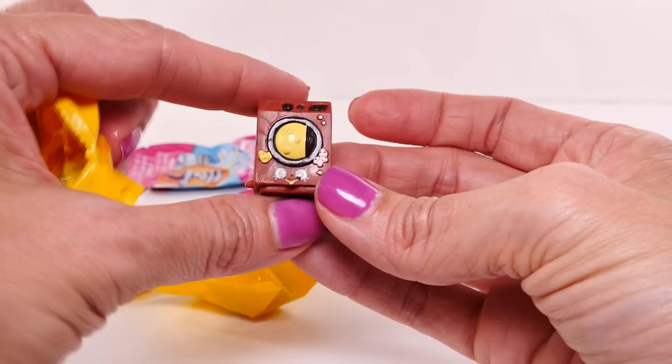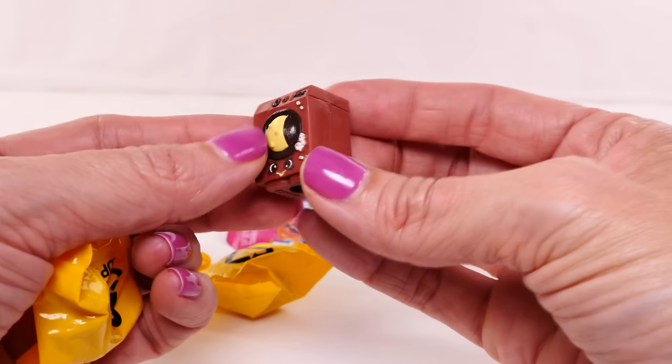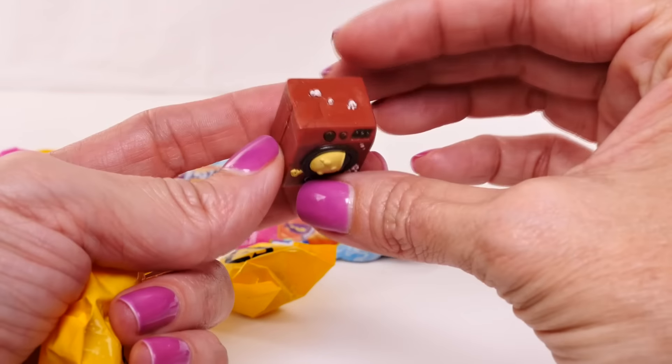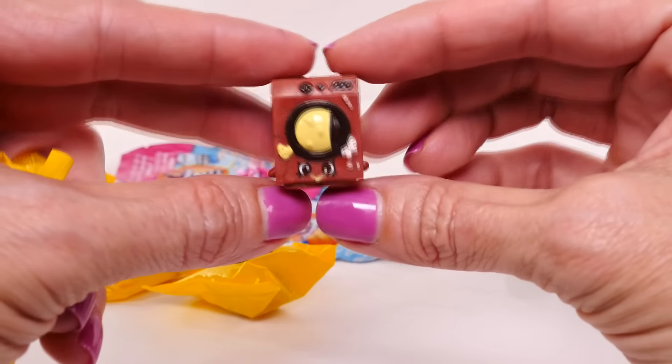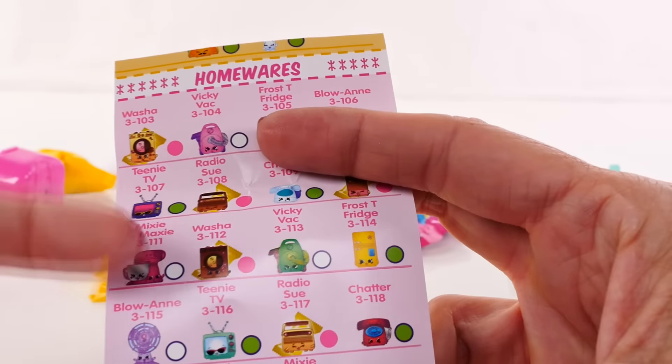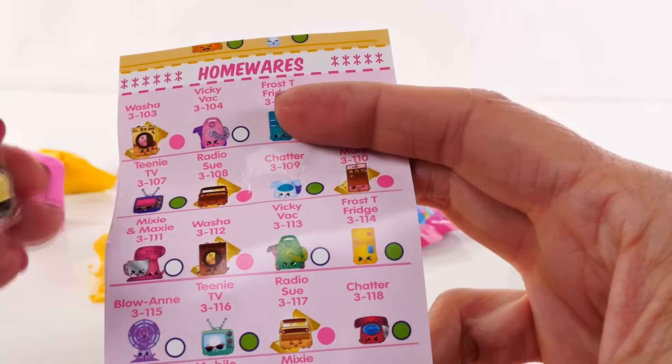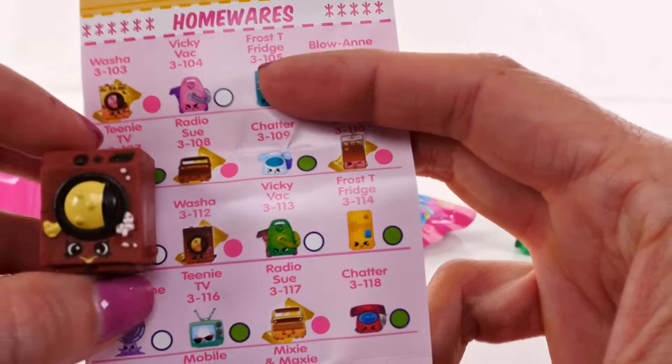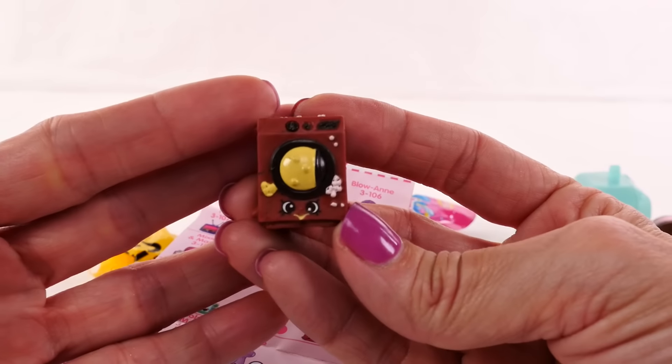Oh this has got to be, I think this is season five, I don't know, I don't know this one. Hmm gonna have to look at my list. Oh my goodness I was so so so wrong, it's from season three and it is Washa, it's a washing machine.